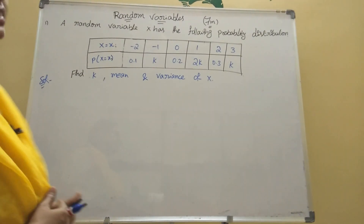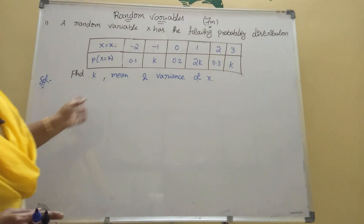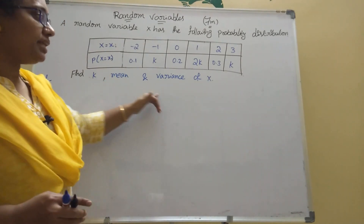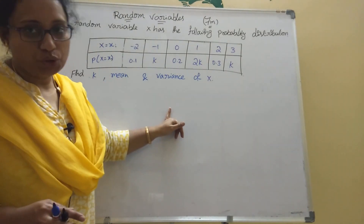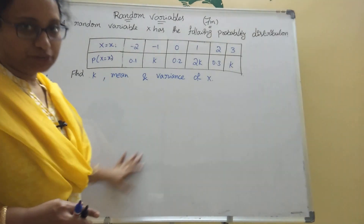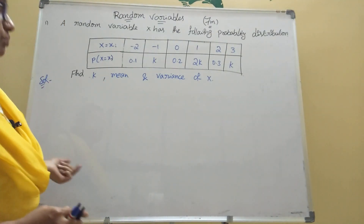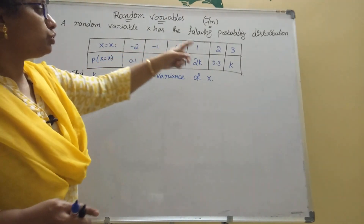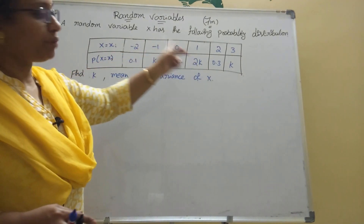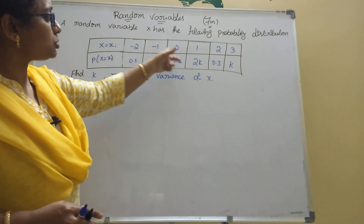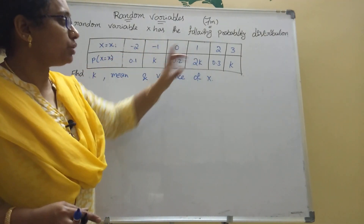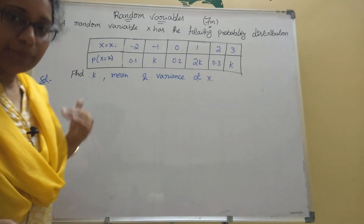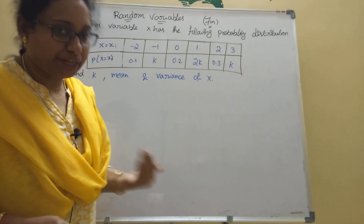Now for the second model problem. This is the same type, but here the x values go from minus 2 to 3: minus 2, minus 1, 0, 1, 2, 3. We need to find k, mean, and variance. The formula is the same: sum of probabilities equals one.